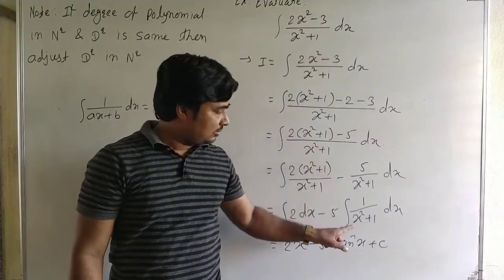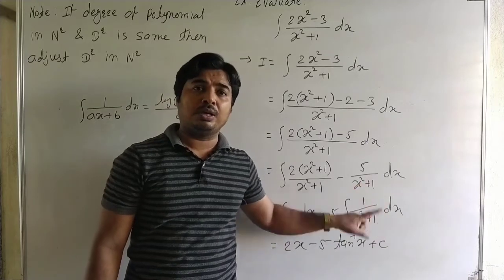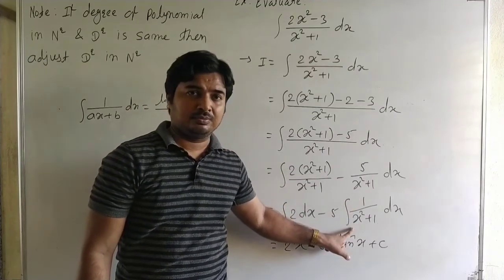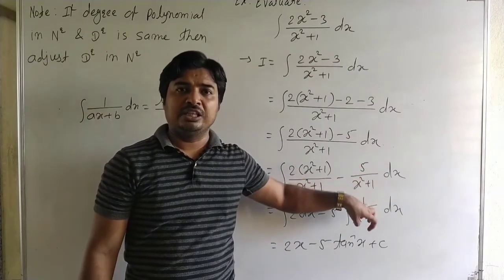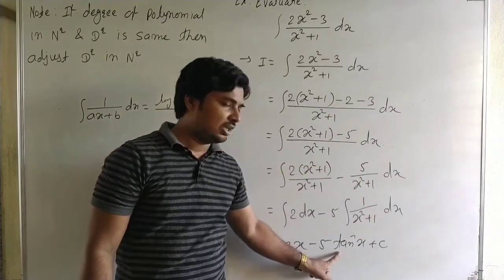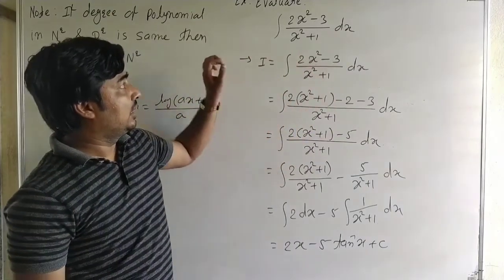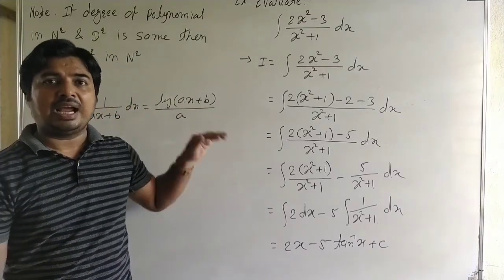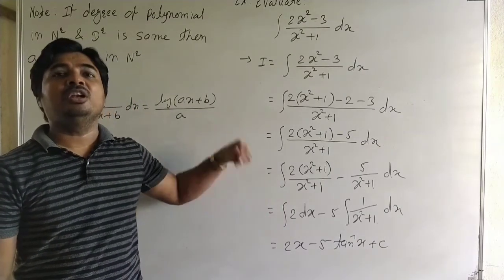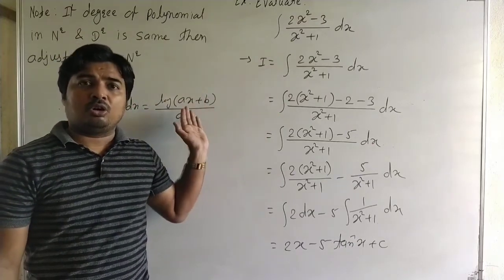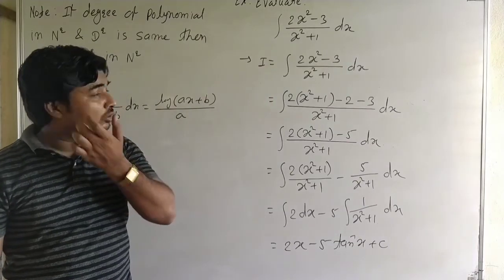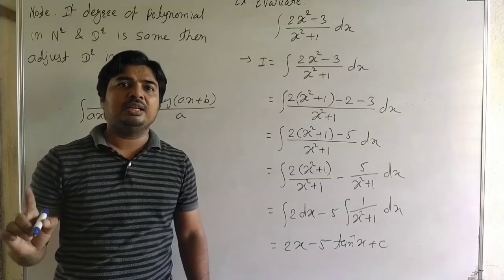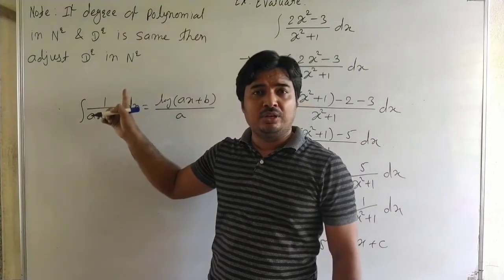In the last three examples there was only linear form 1 by x, so we used integral of 1 by x equals log x. But here it is 1 by x square, so a different method is needed — it is a standard integral so we write directly tan inverse x. The final answer is 2x minus 5 tan inverse x plus C. Important note: if degree of polynomial in numerator and denominator is same, then adjust denominator in numerator — this is useful for the next two or three methods as well.